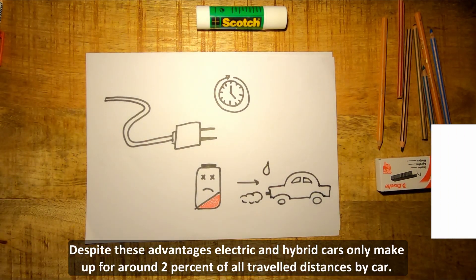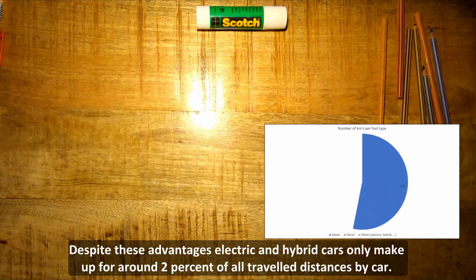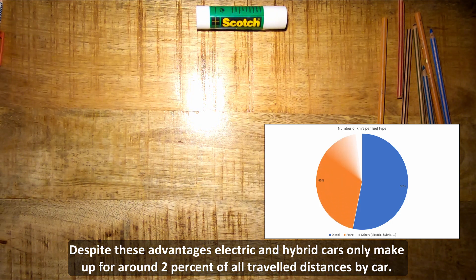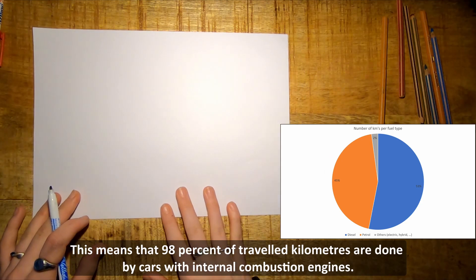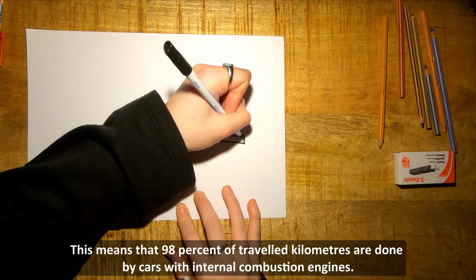Despite these advantages, electric and hybrid cars only make up for around 2% of all travel distances by car. This means that 98% of travelled kilometres are done by cars with internal combustion engines.